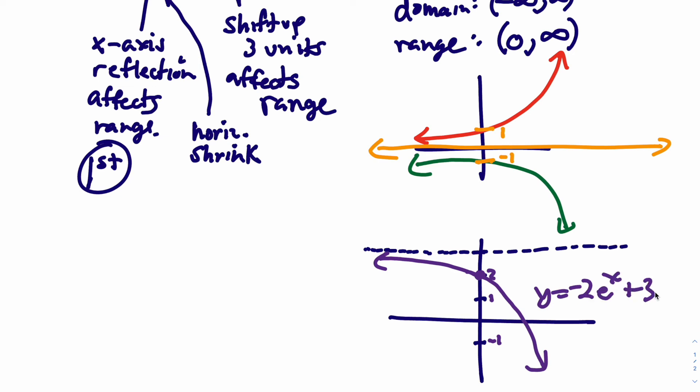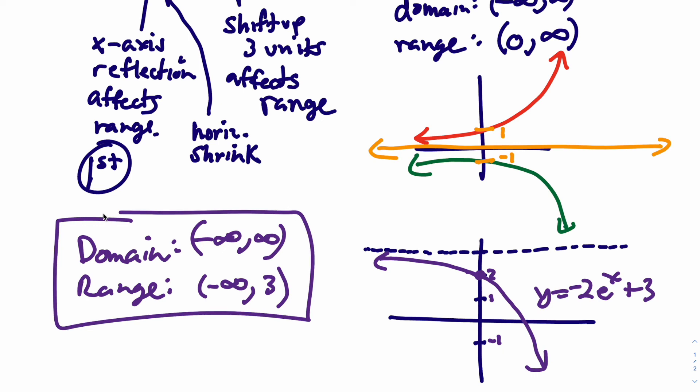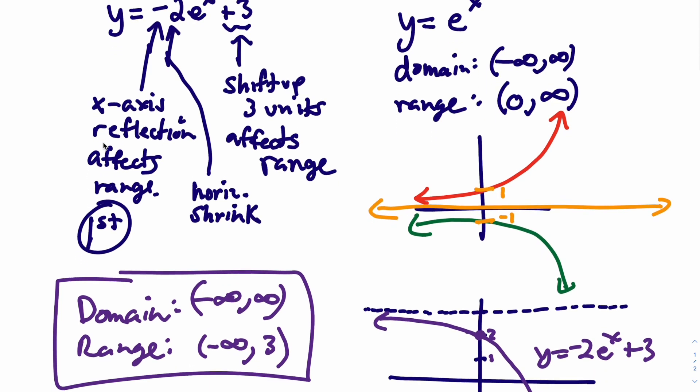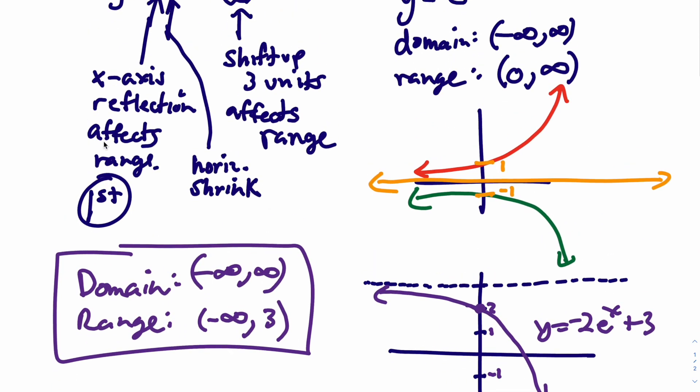So what would be the domain and range? Domain is unchanged. There's nothing you can't plug into that. That goes everywhere, negative infinity to infinity. But the range has changed. The range now goes from negative infinity up to 3. So it's about figuring out how it gets transformed and how that affects the domain and range.